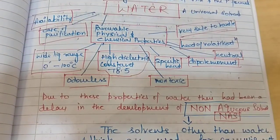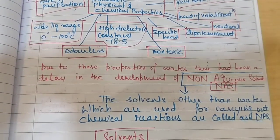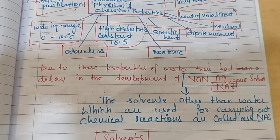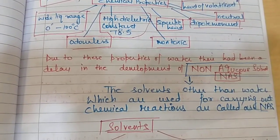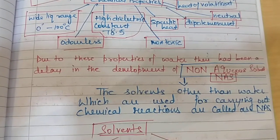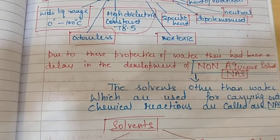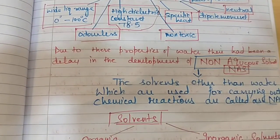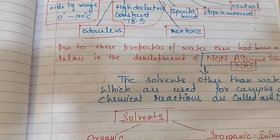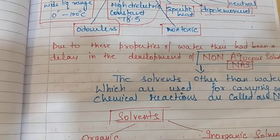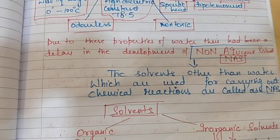Solvents other than water which are used for carrying out chemical reactions are called non-aqueous solvents. I have used the term NAS for non-aqueous solvents, but this is not a universally acceptable abbreviation — I made it for my own convenience. You will find it only in my notes, not anywhere else, and you should not use it in your exams. It should always be written in full as non-aqueous solvents.